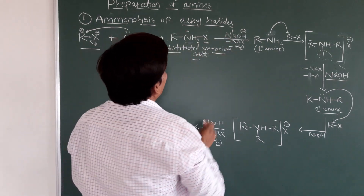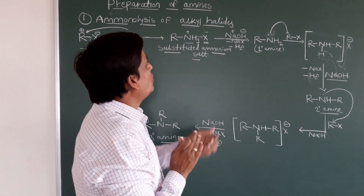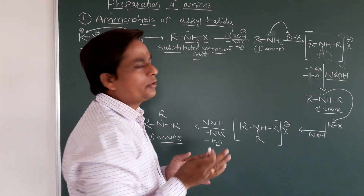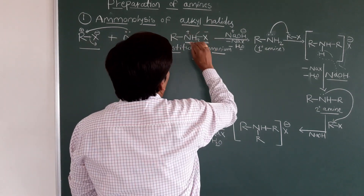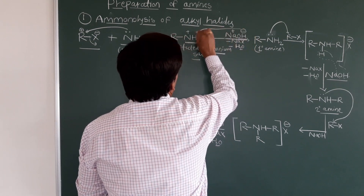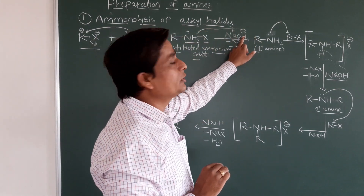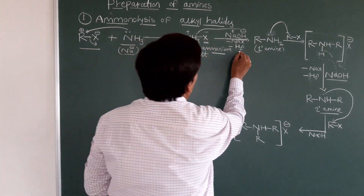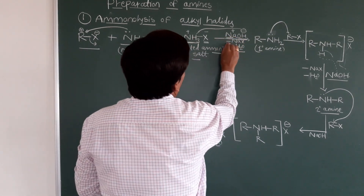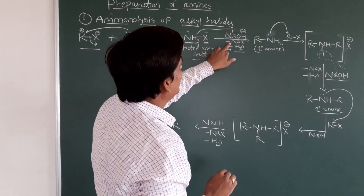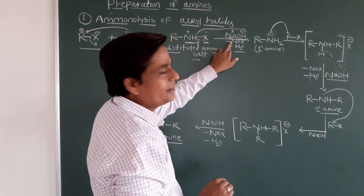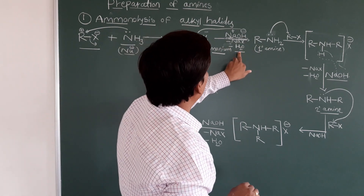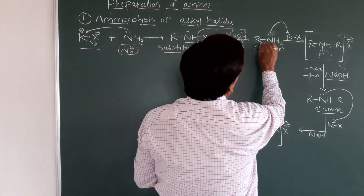When the ammonium salt reacts with NaOH, a water molecule is removed. The OH⁻ abstracts a proton from NH3, losing H2O. The sodium and X⁻ form NaX, which is removed. In this way we get a primary amine, R–NH2.